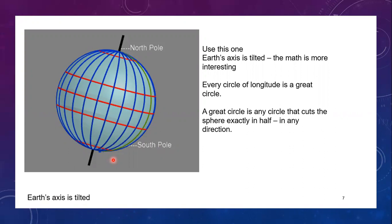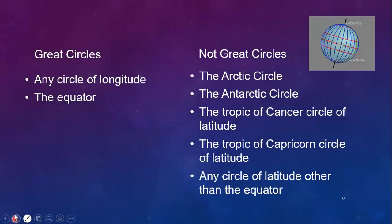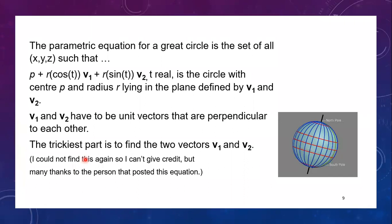To get started, the one observation is that every circle of longitude is a great circle. A great circle is any circle that cuts a sphere exactly in half in any direction. In our case, we're only worried about the ones that follow the path of the earth passing through the north and south pole. Before we get into how to find the equation of a great circle, let's just remind ourselves a few things about the earth.